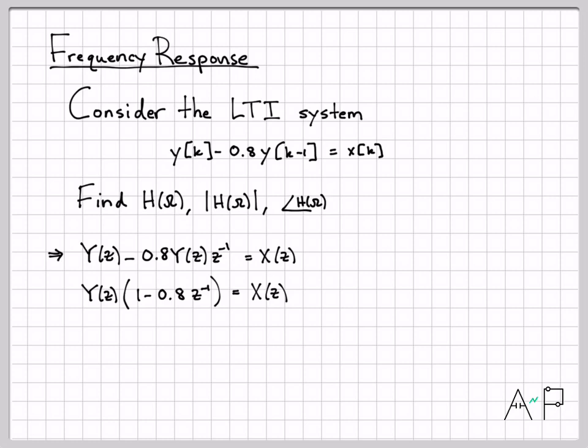And now divide both sides by x of z and divide both sides by that term. We can then isolate the ratio y of z over x of z, which is by definition the transfer function of the system, and that is equal to 1 over this term over here. So I have now found the transfer function of my system, which is good for any number z that's in the region of convergence of the system.